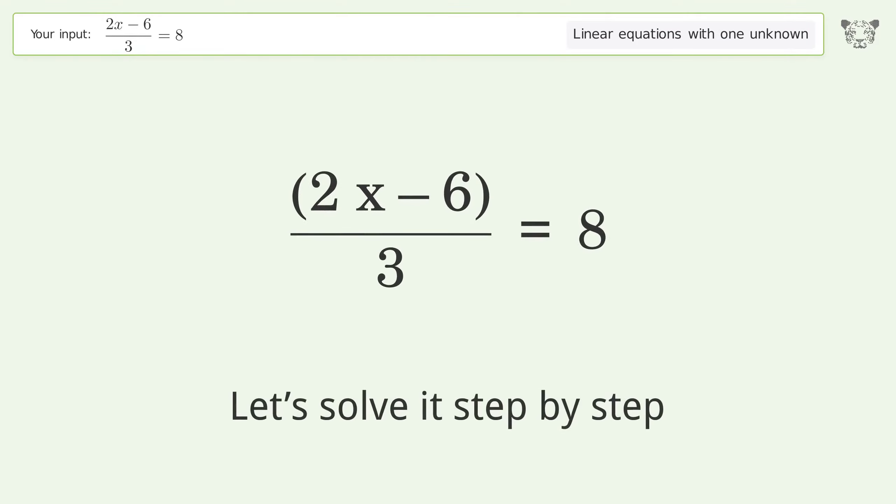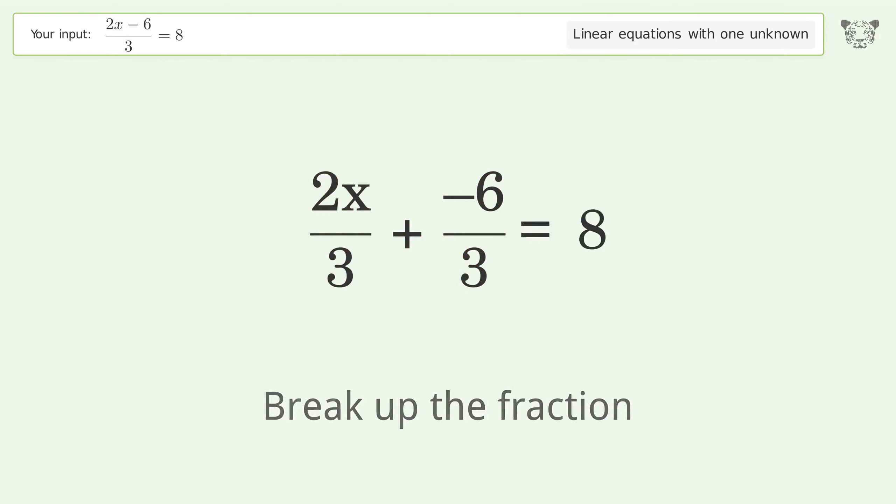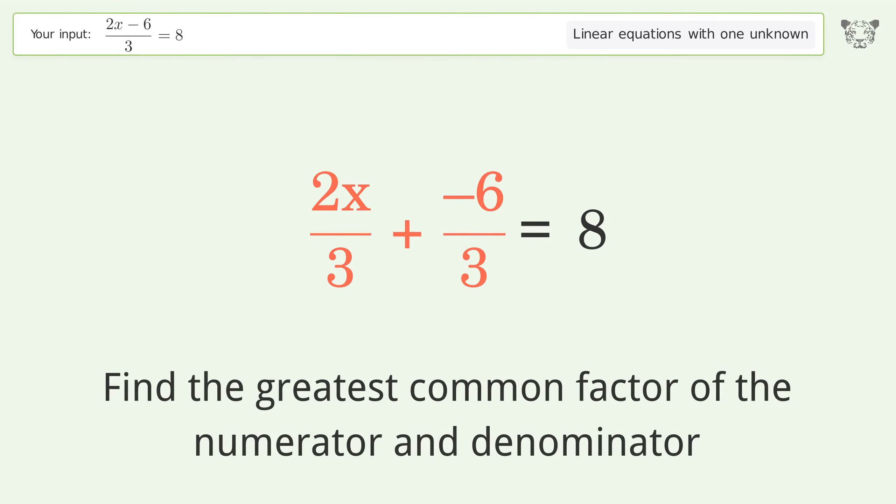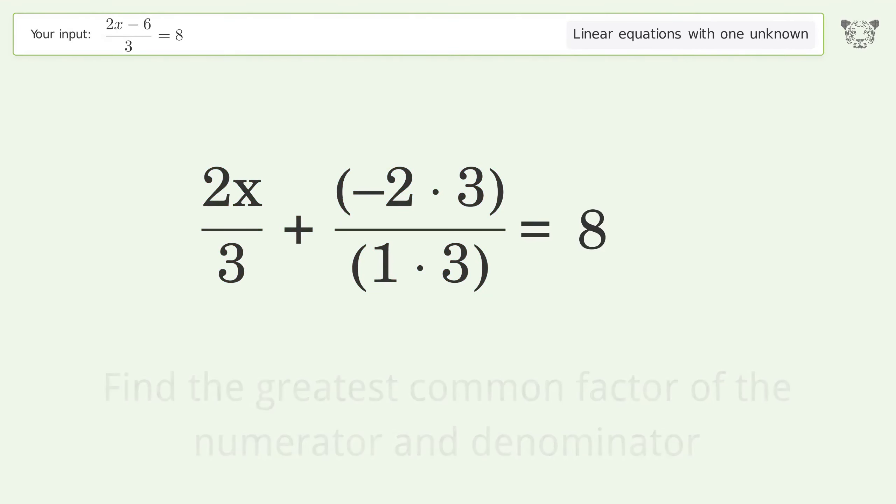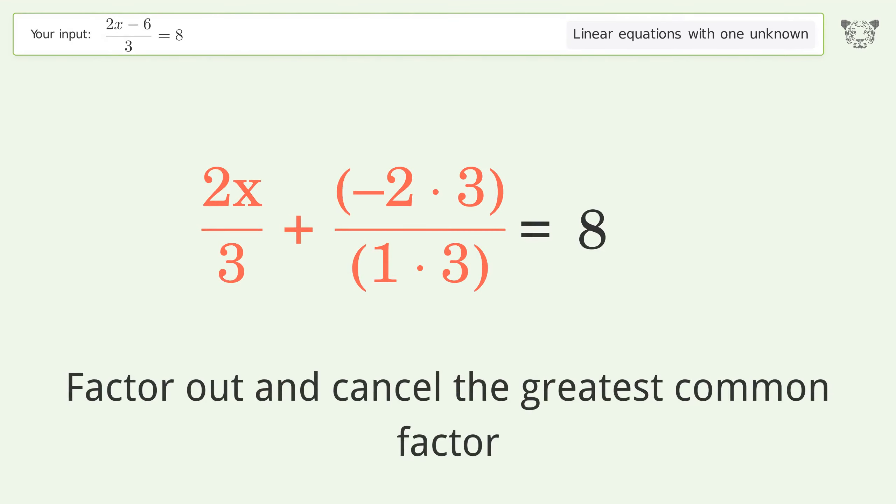Let's solve it step by step. Simplify the expression. Break up the fraction. Find the greatest common factor of the numerator and denominator. Factor out and cancel the greatest common factor.